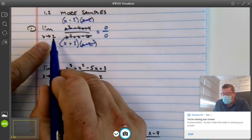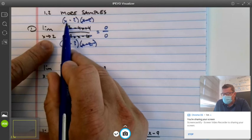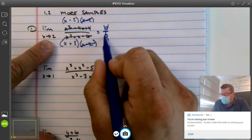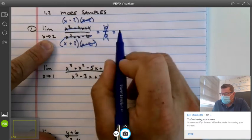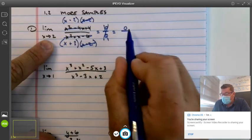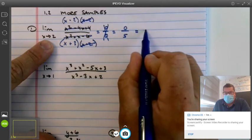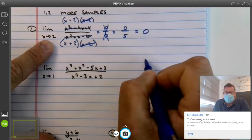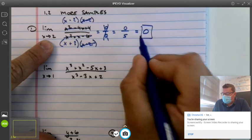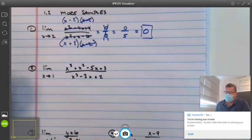Reapply the limit. Let all your x's approach 2. This time when we reapply the limit, we get 0 on the top and 5 on the bottom. Final answer? This thing is approaching 0 as x approaches 2.